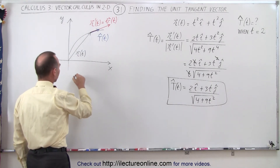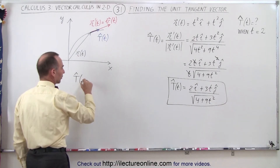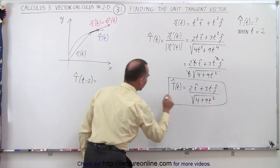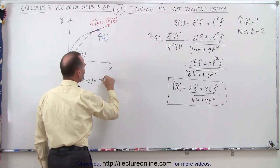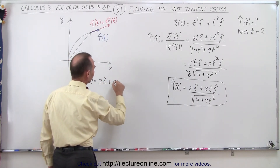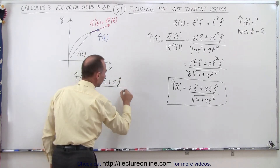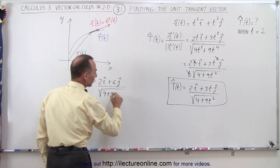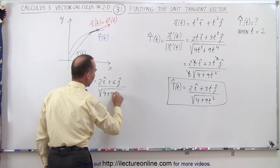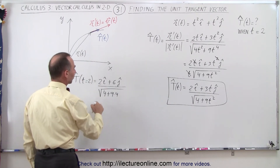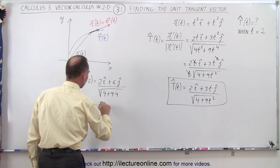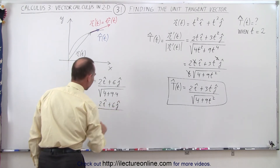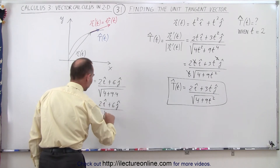So let's find the vector when t is equal to 2, plugging in 2 wherever we see a t. That gives us 2i plus 3 times 2, which is 6j, divided by the square root of 4 plus 9 times t squared. That would be 9 times 4, which is 36, plus 4, giving us 40 under the radical. So this equals 2 in the i direction plus 6 in the j direction, divided by the square root of 40.